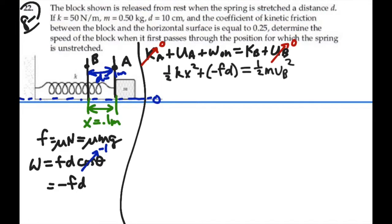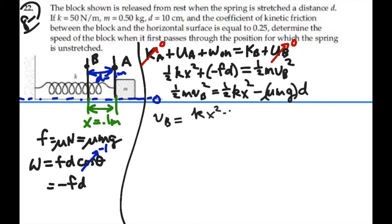We want to solve this for the velocity of B. Multiply both sides by two. Well, let's do this first. One-half mass velocity of B squared equals one-half kx squared minus the frictional force, which is mu mg, and then times d for the work done. Okay, now we'll multiply both sides by two, divide by the mass, take the square root. So the velocity of B equals the square root of kx squared minus 2 mu mgd, divided by the mass.